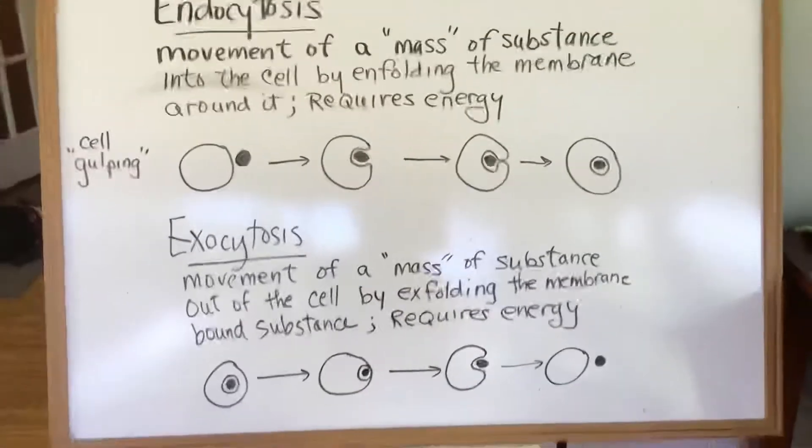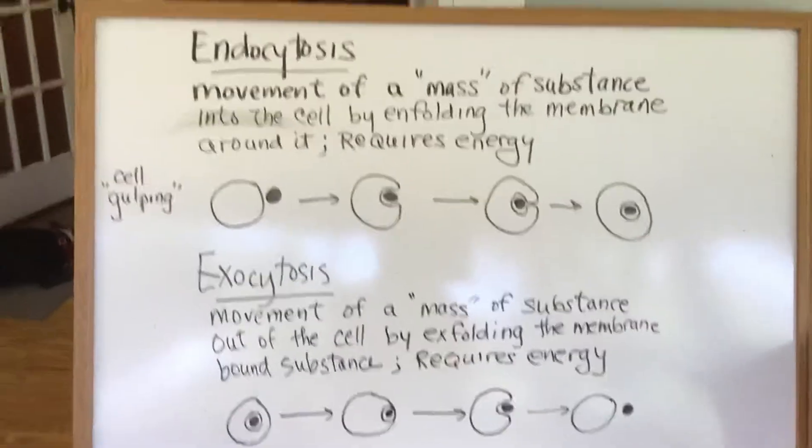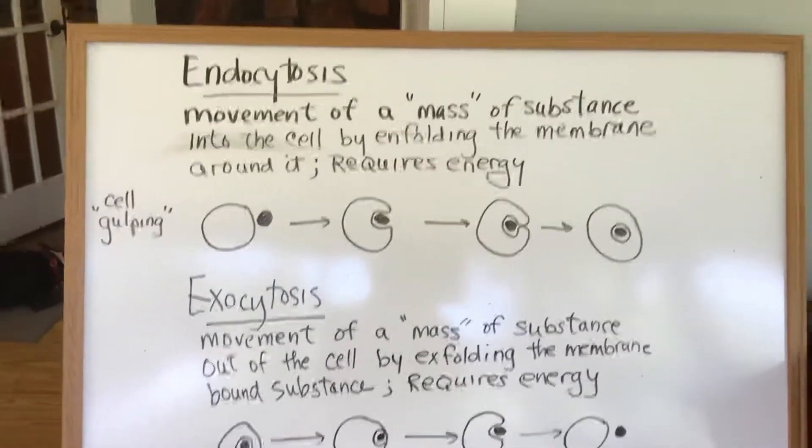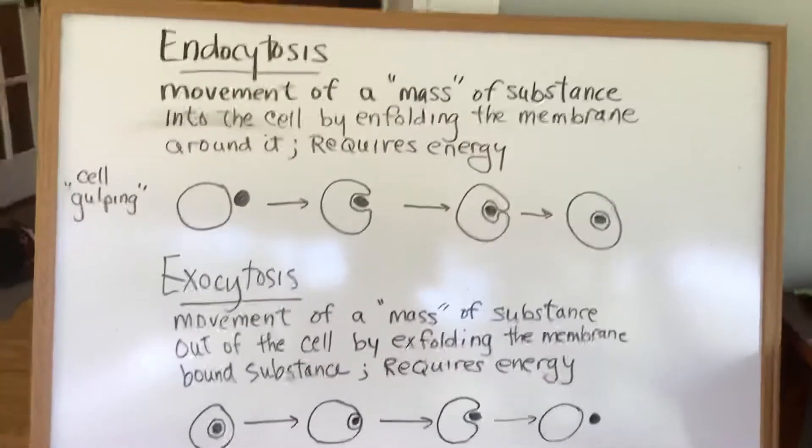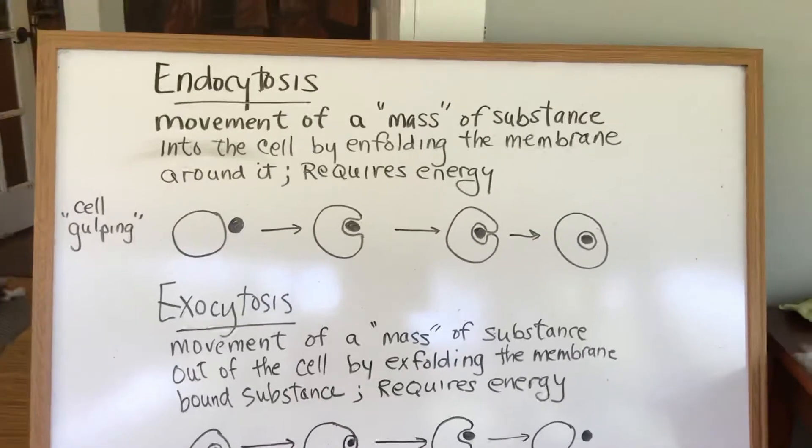So the first thing we're going to talk about is endocytosis. This is also sometimes known as cell gulping or engulfing. So what is happening is the cell wants to get a mass of something.